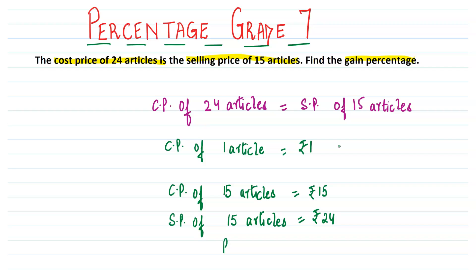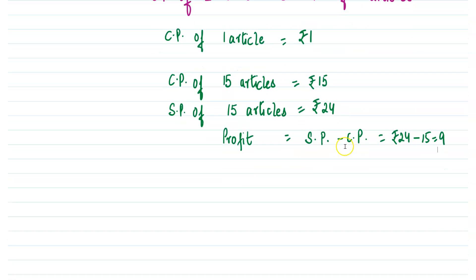So how much is the profit? Profit is always calculated by subtracting CP from SP. So that would be rupees 24 minus 15. That is 9. So rupees 9.